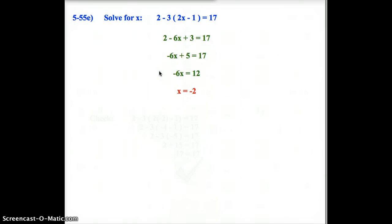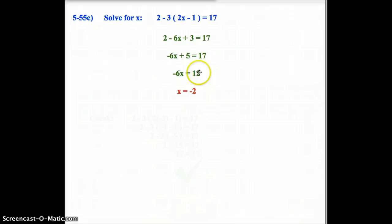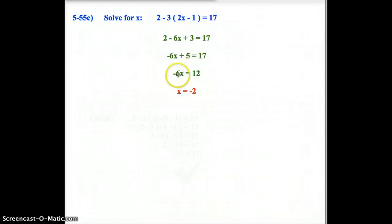Next step is I need to move the positive 5 to the other side. Now how do I do that? Using inverse operations. I'm going to do the opposite of plus 5, which is minus 5. When I subtract 5 from both sides, I've got 12 on the right side, negative 6x on the left side. Next I divide by negative 6 on both sides. And I get x equals negative 2.